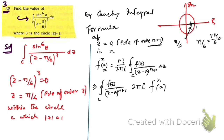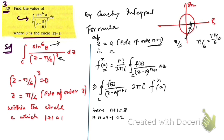Here f(z) = sin^6(z). The order of the pole is 3, so we take n + 1 = 3, which implies n = 2. We therefore need to find the second-order derivative of f(z) = sin^6(z).